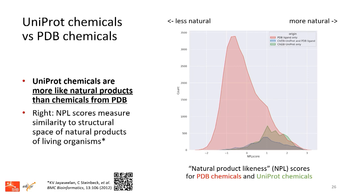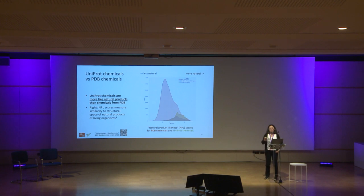Looking at the chemical properties of the two sets, they are also very different. This is a plot showing natural product likeness score for PDB and UniProt chemicals, using the same color code. The chemicals in PDB are much bigger but tend to be less like natural compounds than those found in UniProt. This is understandable because PDB contains a lot of structures in complex with drugs and synthetic compounds.